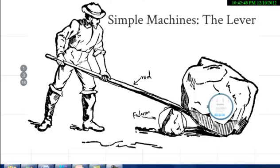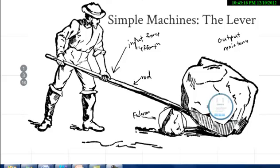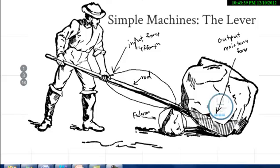We also want to identify some other things, such as the input force — also called the effort force. This is where we apply our force to the machine. And then there's the output or resistance force, which would be this rock in this case. We also want to identify the length of the input arm versus the output arm. These are always measured from the fulcrum to where the force is applied. The distance from where the effort is applied to the fulcrum is the input distance, and the distance from the fulcrum to where the output force is applied is the output or resistance arm.